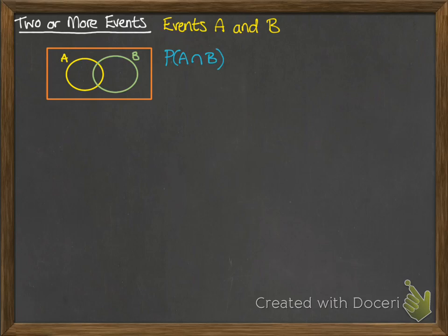So the probability of A intersection B is how you read this particular notation, but how we would usually say it is the probability of A and B. So that's meaning the intersection or anywhere where we could have A and B happening. So that's that middle section there.